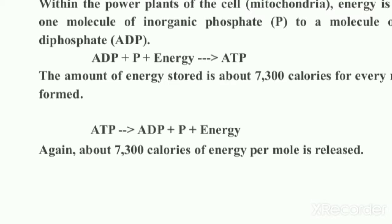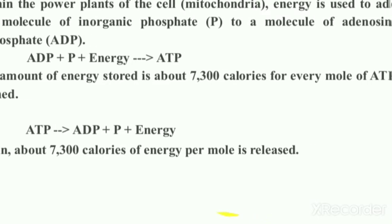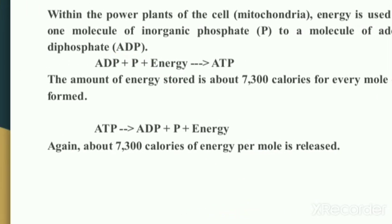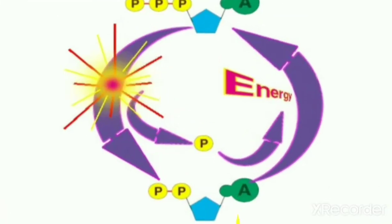The same amount of energy is required and released for both conversions — ADP to ATP and ATP to ADP. The ADP and phosphate are then free to return to the power plant and be rejoined again. In this way, ADP and ATP are constantly being recycled — there is continuous formation of ATP then ADP, ATP, ATP — this is the continuous cycle.